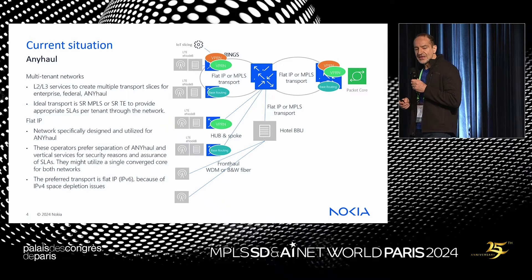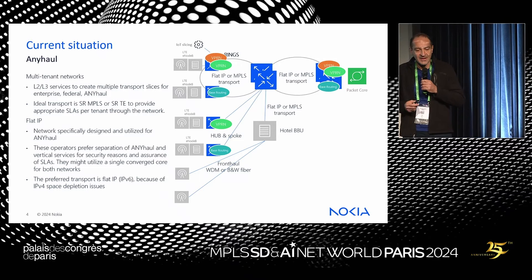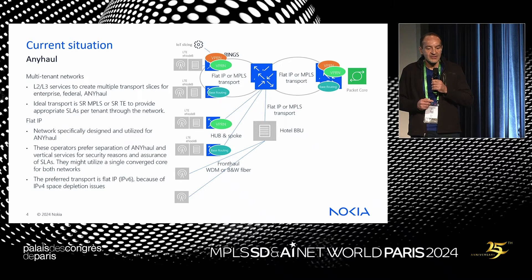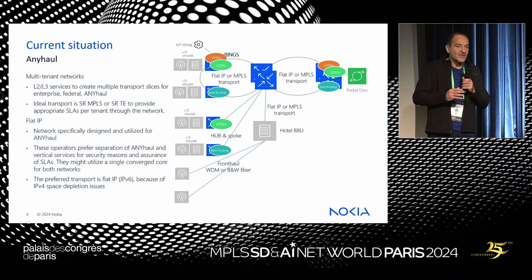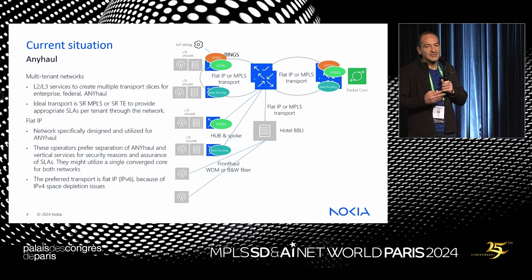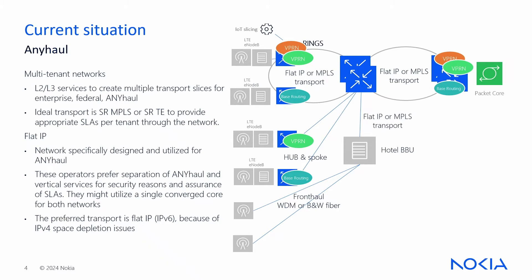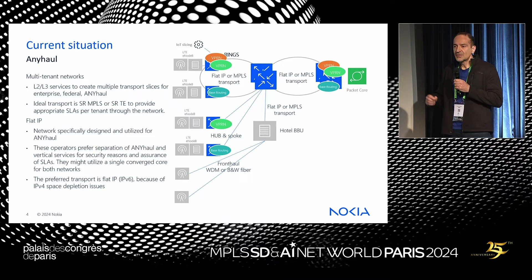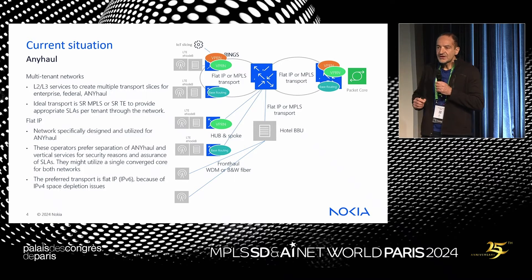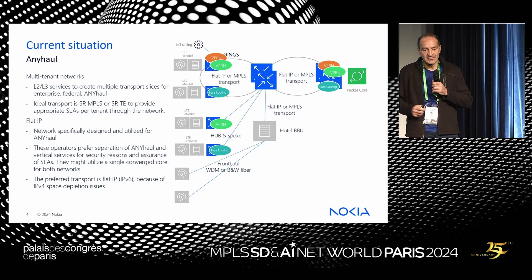Let's look at the status of deployments as they stand right now. When it comes to wireless networks, we have three types of deployment. When fiber is scarce — as we see in EMEA and APAC — operators like to use VPNs and multi-tenant type networks. You can have enterprise wireless over the same network, slicing it via eVPNs and VPNs end-to-end from the radio all the way to the core. The transport of choice is segment routing — whether SRMPLS or SRV6 — with traffic engineering to deliver different SLAs.